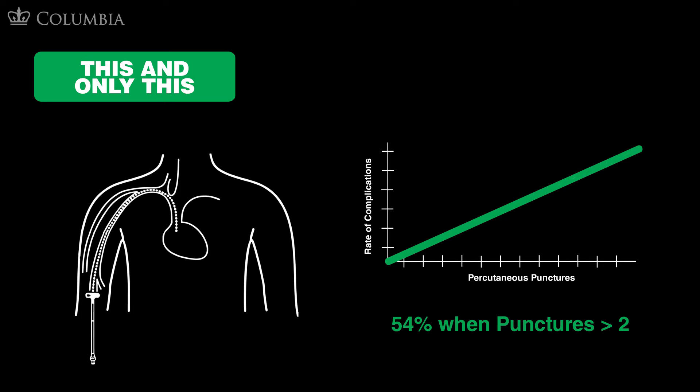A 'this and only this' fixation error can occur with procedures, where repeated attempts of central line placement at the same site or laryngoscopies using the same technique can increase the rate of complications. In a study of central lines, the complication rate increased with the number of percutaneous punctures, with a complication rate of 54% when more than two punctures were required.